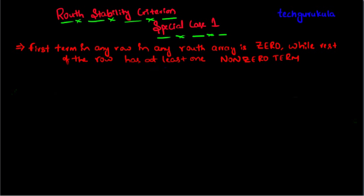In this video, we are going to see route stability criterion special case. This special case is about when you are forming the routes array, if in any row the first term of the row becomes zero and at least one of the rest of the elements in the row are non-zero, then we are going to use the procedure which we will see here.